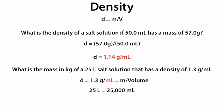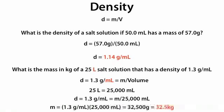Now we can plug in our volume. Density is equal to 1.3 grams per milliliter, which is equal to the mass of the salt solution divided by 25,000 milliliters, which we just converted as a volume. Multiplying 1.3 grams per milliliter by 25,000 milliliters, we get the mass of the salt solution is 32,500 grams. And since the problem asks for the mass in kilograms, we divide our 32,500 grams by 1,000 to get 32.5 kilograms as the final answer.